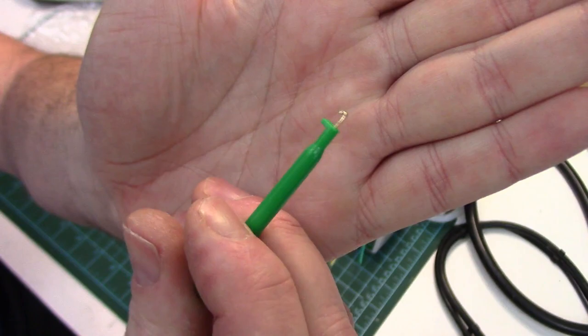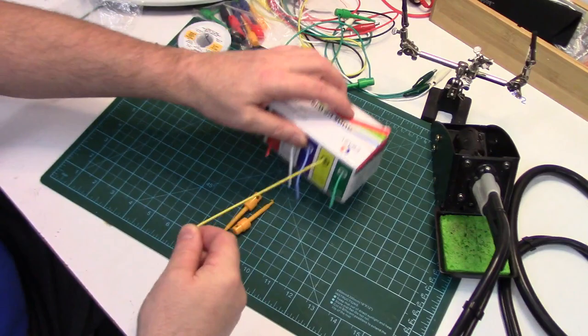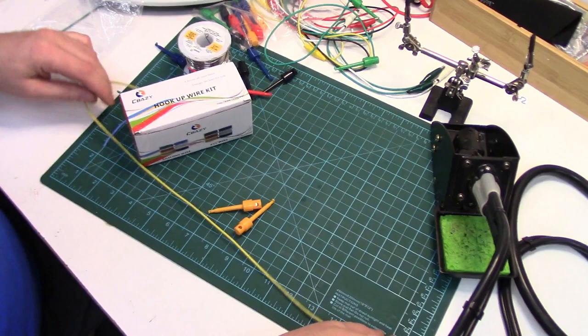They've got a nice small little clip on the end. They're really handy—I've always wanted a set of these. I'm going to make these leads about 17 inches long just because it's easy to measure out on the cutting mat here.